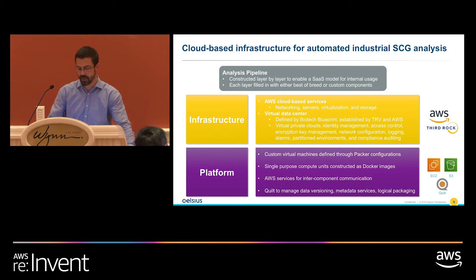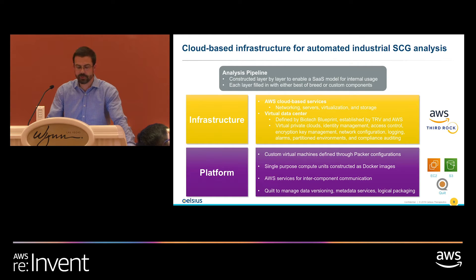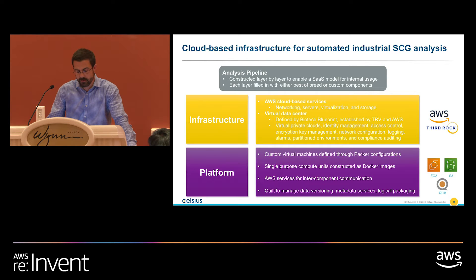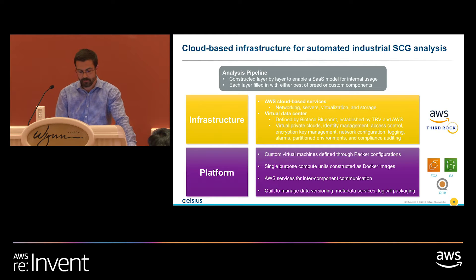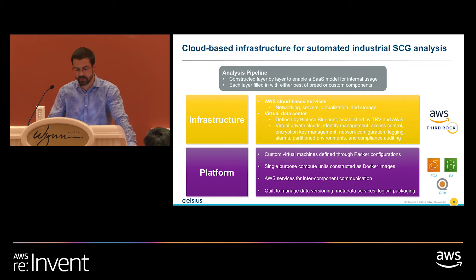Switching gears to the analysis: we've established an analysis pipeline in AWS cloud. We used the Biotech Blueprint created by Third Rock in AWS, which helped us tremendously at the beginning to jump-start our cloud environment. We've established an analysis platform based on EC2 nodes, using tools such as Packer and Docker to encapsulate all our analysis steps, and we're using Quilt for data versioning — being able to create packages of data and retain consistency for each version of the analysis.